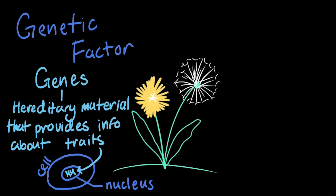So, if one dandelion has more seeds than another as a result of which version of a certain gene it has, we can say that the difference in seed number is due to a genetic factor. The other major influence on how our dandelion grows is its environment.